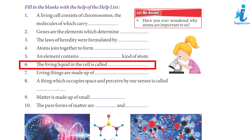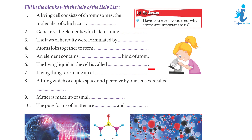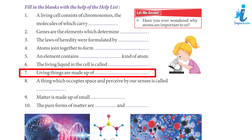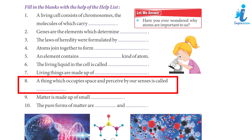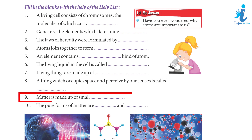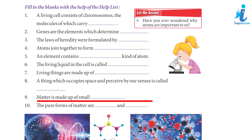6. The living liquid in the cell is called protoplasm. 7. Living things are made up of cells. 8. A thing which occupies space and is perceived by our senses is called matter. 9. Matter is made up of small atoms. 10. The pure forms of matter are elements and compounds.